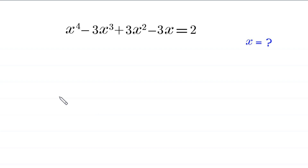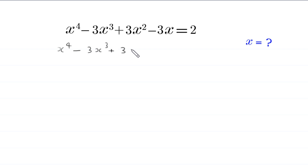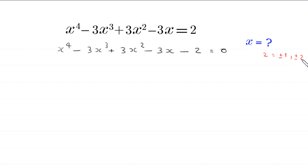Hello everyone, welcome. We will solve this quartic equation: x to the power 4 minus 3x cubed plus 3x squared minus 3x is equal to 2. Our job is to find all possible values of x. We write this in standard form: x⁴ - 3x³ + 3x² - 3x - 2 = 0. Checking rational factors of 2 — that is ±1 and ±2 — none of these are solutions, so we use another approach.